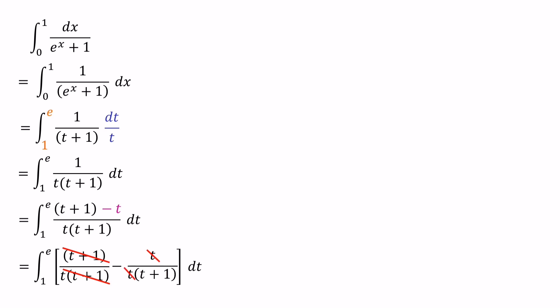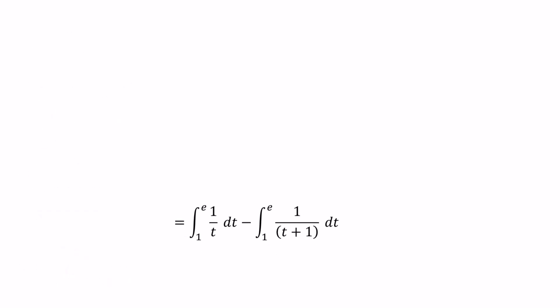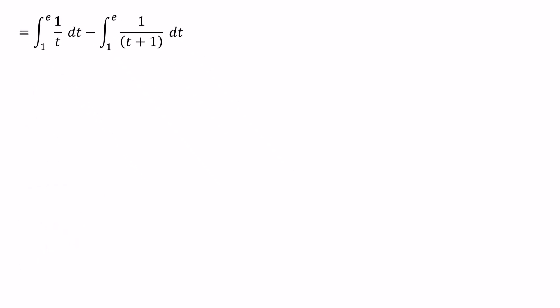Then we can consider each integral side separately. The first one is the integral of 1 over t, and the second one is the integral of 1 over t plus 1. The integral of 1 over t we can write as ln modulus t. The integral of 1 over t plus 1 we can write as ln modulus t plus 1.